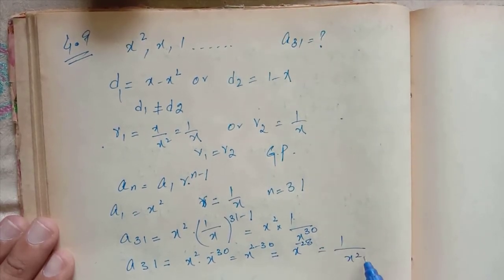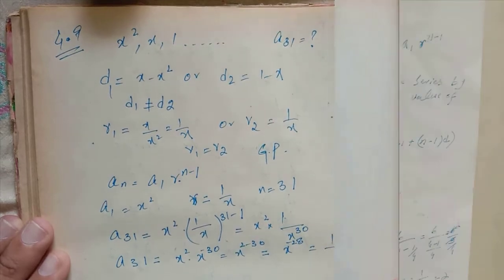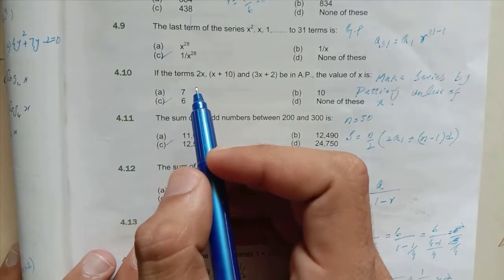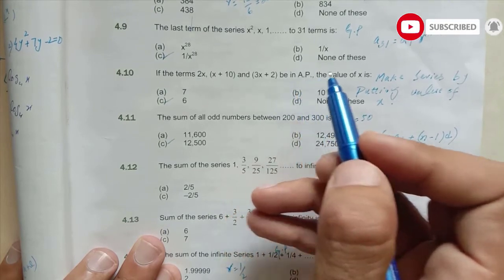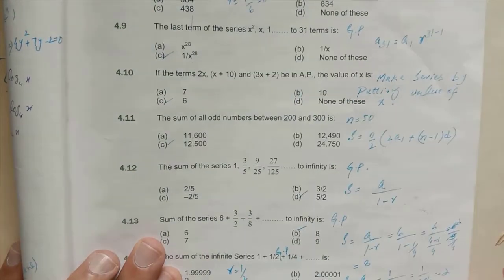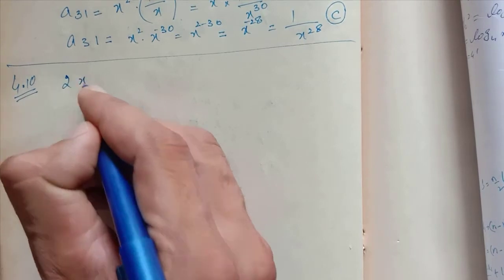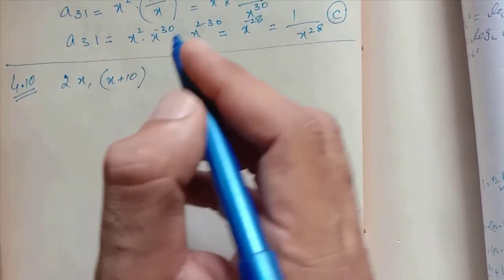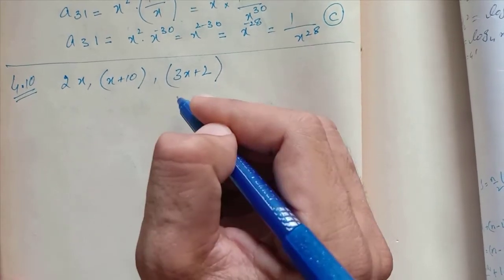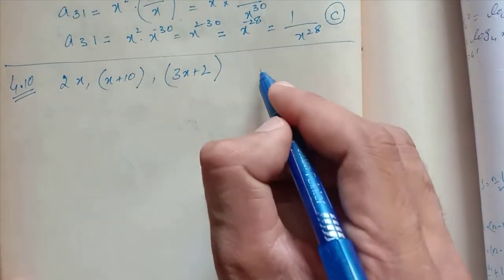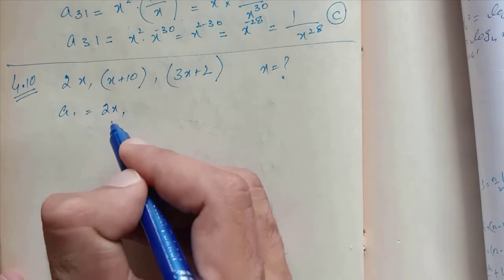Now move towards question number 4.10. If the terms 2x, x+10, and 3x+2 are in arithmetic progression, the value of x is? This is an arithmetic progression. a1 = 2x, n = 3.